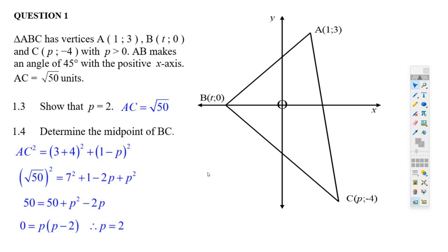Now that you know p is 2, finding the midpoint of BC is going to be pretty easy because we know that t equals -2 and p equals 2. So (-2 + 2) divided by 2. The midpoint formula tells us to add the x values and divide by 2. Well, -2 + 2 is 0, so the x value of the midpoint is 0.